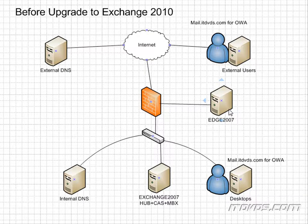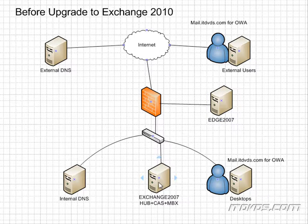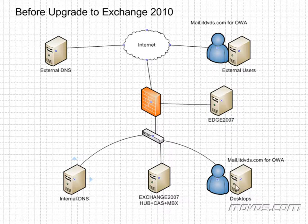In our example, it's called Edge 2007, so it's an Exchange 2007 Edge Transport Server. Then inside of our network, we have an Exchange Server that's Exchange 2007, and it has the hub transport, client access server, and mailbox server roles on it. And then we have internal DNS servers that are normally our domain controllers, and our internal users that will access their mailbox with Outlook and Outlook Web Access.